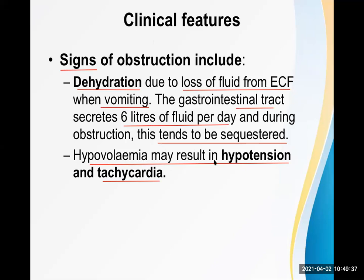Sometimes a patient's blood pressure may be 90 but they are asymptomatic — no dizziness, headache, palpitation, or tachycardia — which is normal for them. However, when the drop in blood pressure is accompanied by other clinical features, it is called hypotension and is pathological.